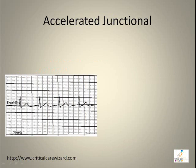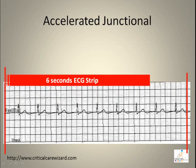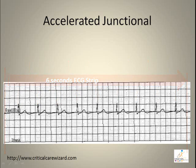Accelerated junctional rhythm features a regular rhythm. The rate should be between 60 to 100 beats per minute.